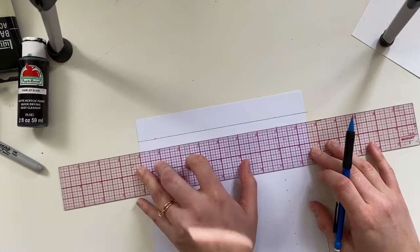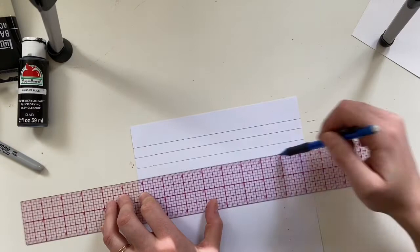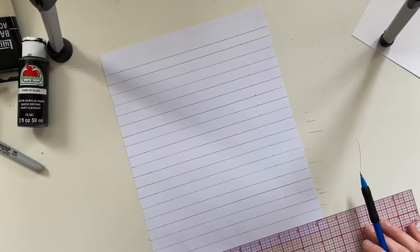So start at the first two notches at the top of the paper, working your way down. This is so we can create lines that are a half inch apart going all the way down to create that notebook look.